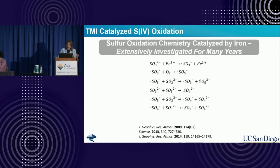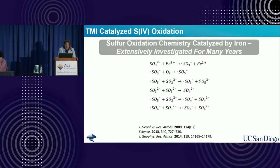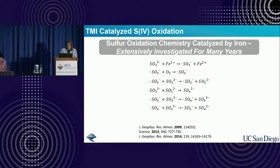We're trying to understand how, when you have metals—remember that dissolution of iron(II) and iron(III)—and you have some organic compounds, that builds up complexity and how it impacts sulfur oxidation chemistry. The sulfur oxidation chemistry catalyzed by iron has been extensively investigated for many years. It's complicated—radical-driven chemistry in the aqueous phase. The kinetics can be very complex: first order under one regime, second order under another, 1.5 order or 0.2 order under different regimes.